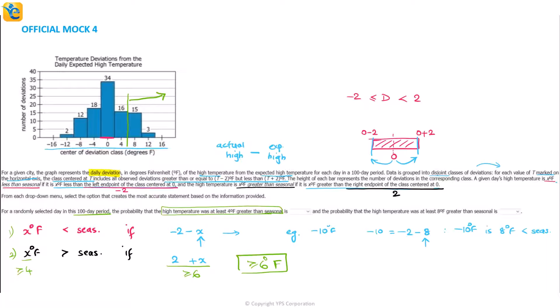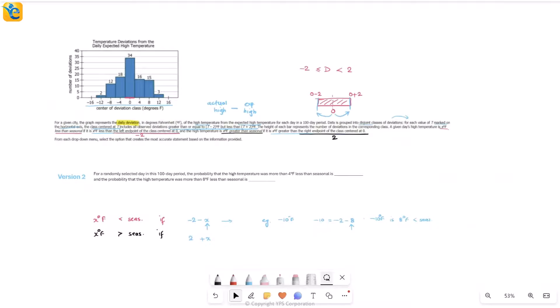If you try to read it here, greater than or equal to six on the graph means all of those here on the right of this green line. We have 15 deviations plus 3, which means it's a total of 18 deviations out of 100. Because it's 100 days, so 18 out of 100 gives us a probability of 0.18. Then the second part is the probability that high temperature was at least eight degrees Fahrenheit greater than seasonal. This is simple - we're just changing the value from four to eight, so this will change to greater than or equal to 10. Greater than or equal to 10 means everything on the right of the purple line, and it's just these three days. So 3 out of 100 gives you a probability of 0.03.